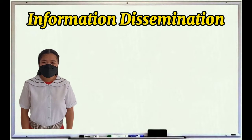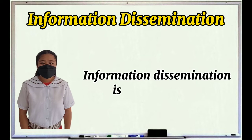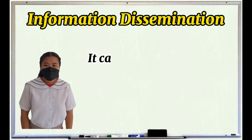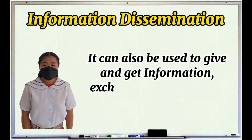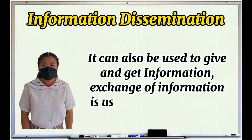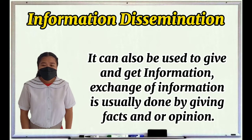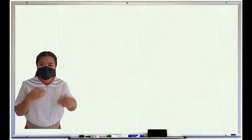The fifth function is information dissemination. Information dissemination is a function that conveys information. It can also be used to give and get information. Exchange of information is usually done by giving facts and/or opinions.